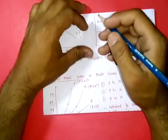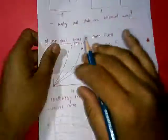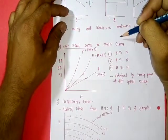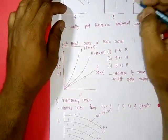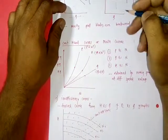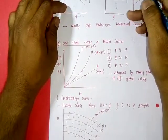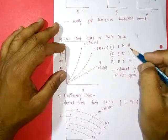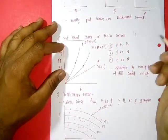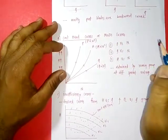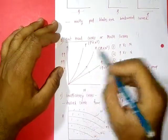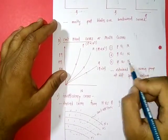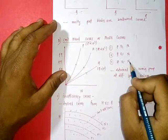The next type of curve is the constant head curve, also called the main curve. These curves are obtained by running the pump at different or various values of speeds — that is, by changing the speed of the pump. Graphs of head versus speed, power versus speed, and discharge versus speed are drawn.